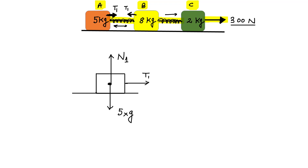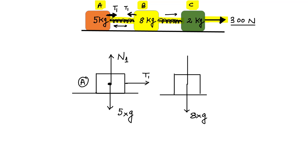Now let us draw the free body diagram for block B. There is a weight of 8 times g acting downward, and a normal reaction N2 acting upward. This block has a different mass, so it pushes the ground differently and experiences a different normal reaction N2. The string on the left pulls block B with tension T1. There is also a string on the right side that pulls in the opposite direction — let us call that tension T2.